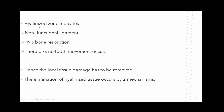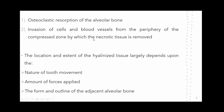The hyalinized zone indicates that the ligament has become non-functional. There is no bone resorption and hence further tooth movement cannot occur, which is why it is essential to remove this hyalinized zone. This occurs by two mechanisms: osteoclastic resorption of the alveolar bone, and invasion of cells and blood vessels from the periphery of the compressed zone to remove the necrotic tissue.